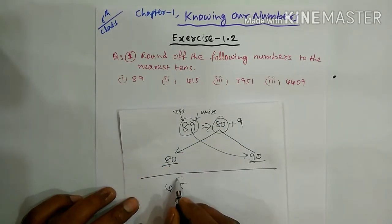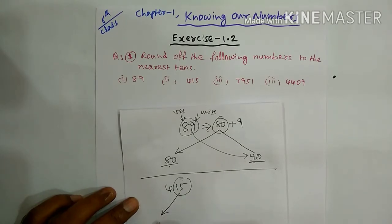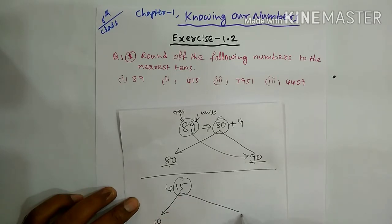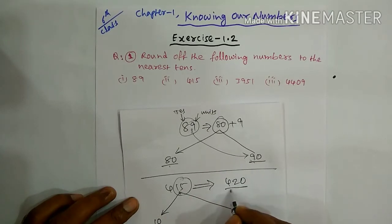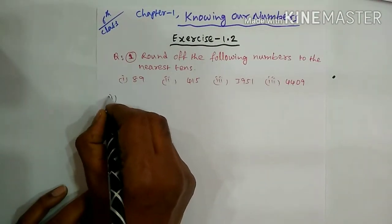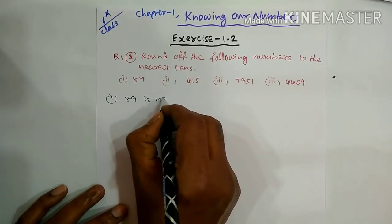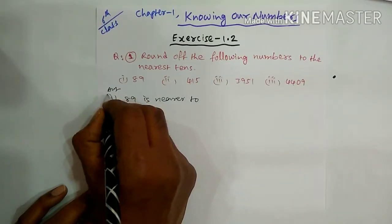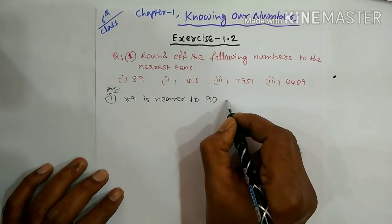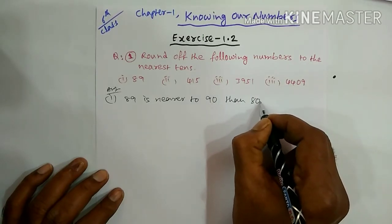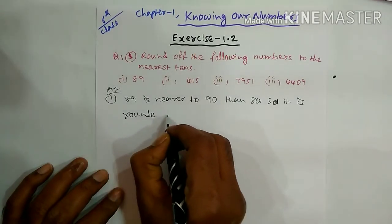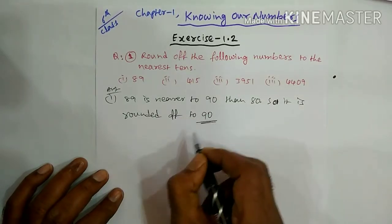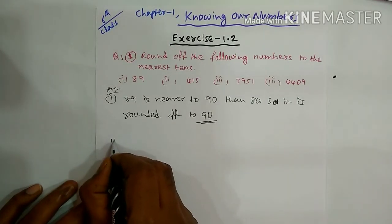Second: 415. The tens place gives a range of 410 to 420. The last two digits are 15, which is exactly halfway between 10 and 20. By convention, whenever the number is at equal distance, we take the highest value. So 415 is rounded off to 420.